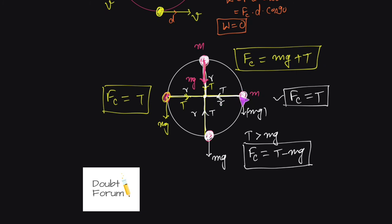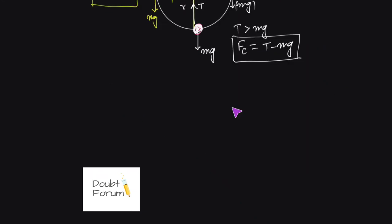So this is about an object tied to a string rotating in a circular path. When the object is at the bottom point the centripetal force is T minus Mg; when it is at the side point the centripetal force equals the tension in the string; when it is at the topmost point the centripetal force is the sum of weight plus tension; and at the side points the centripetal force is balanced by the tension in the string.